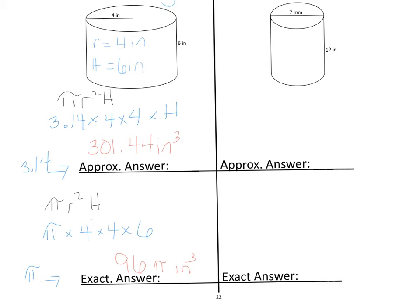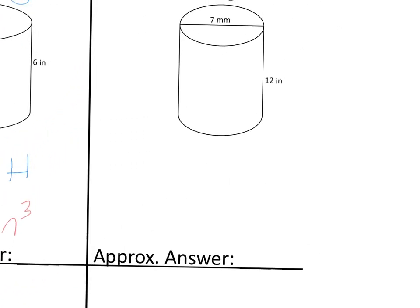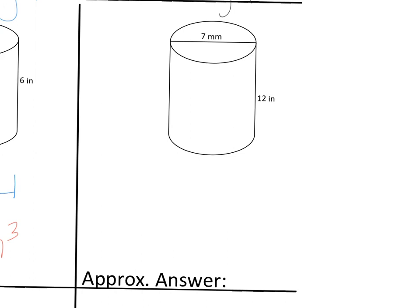In looking at the second one, we note that we're given a diameter. So to find the radius, we have to take the diameter and divide it by 2. We know it's the diameter because it goes all the way across the circle and not halfway like the first one.